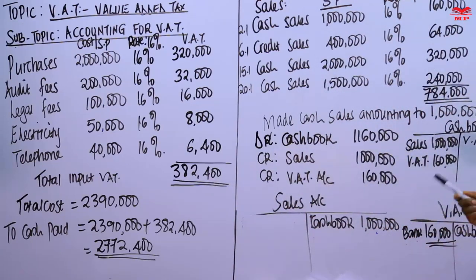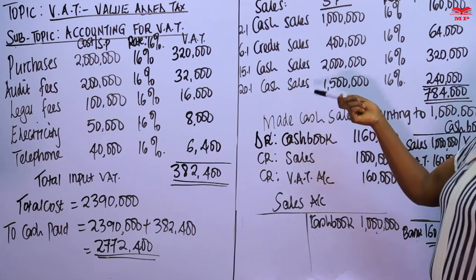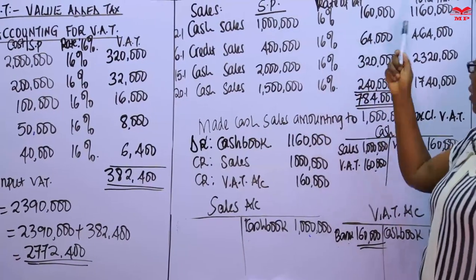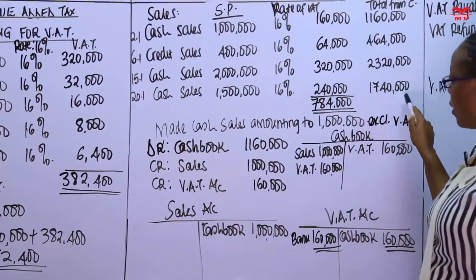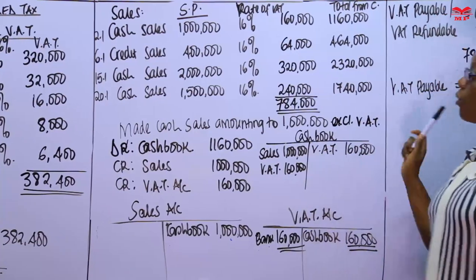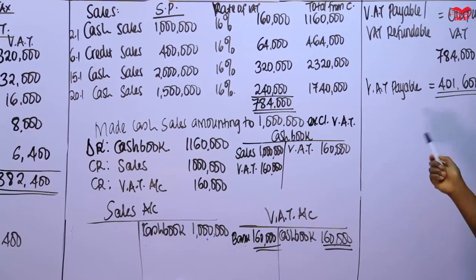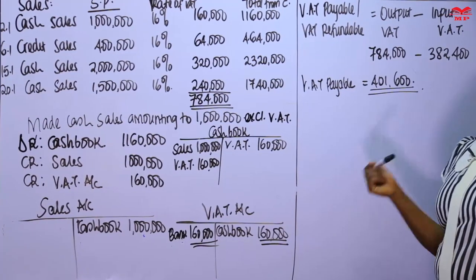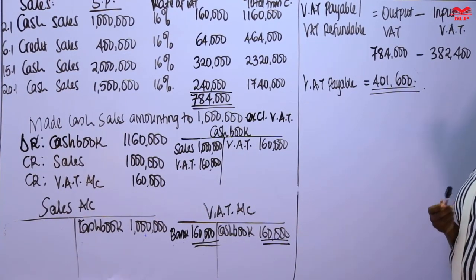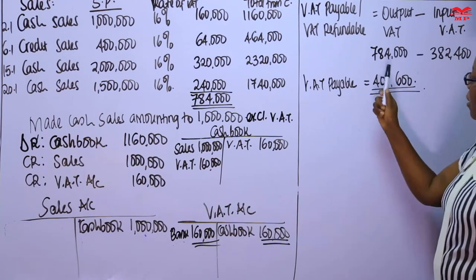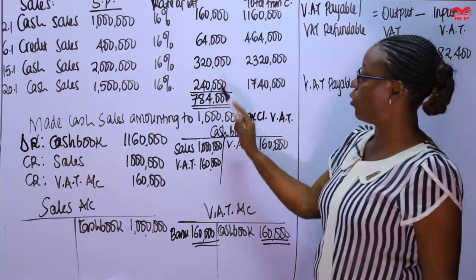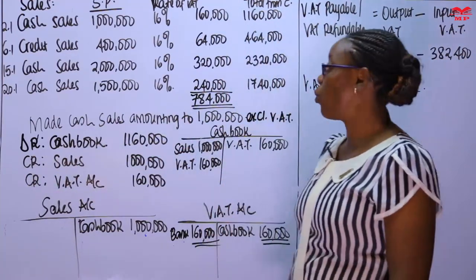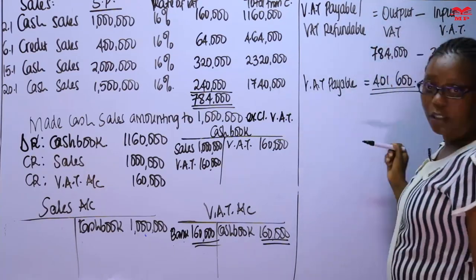Then in the same business, they did sales — both cash and credit. The sales were exclusive of VAT, so we computed the VAT and this is the amount received from customers. To determine the VAT payable or refundable, you take what you've collected from customers and deduct what you've paid to suppliers. That is because VAT should be borne by the final consumer.